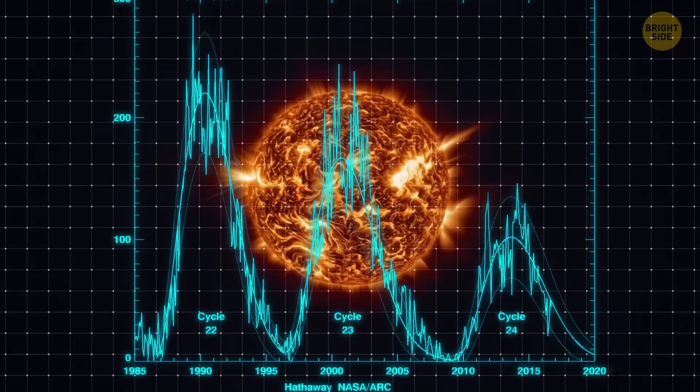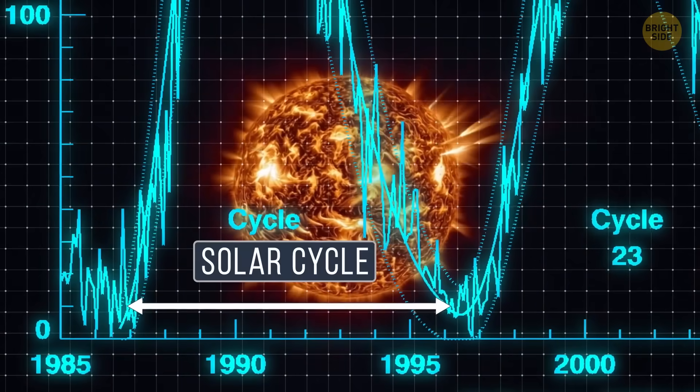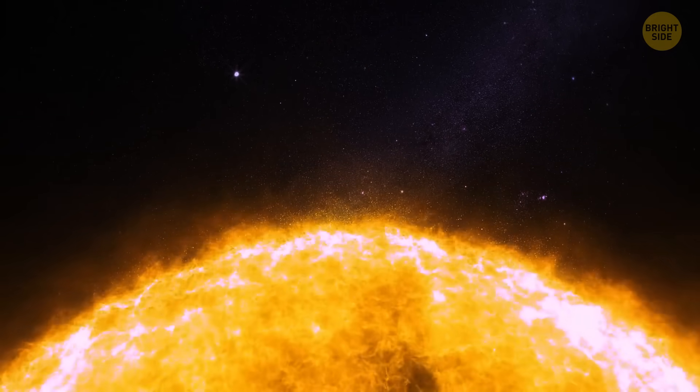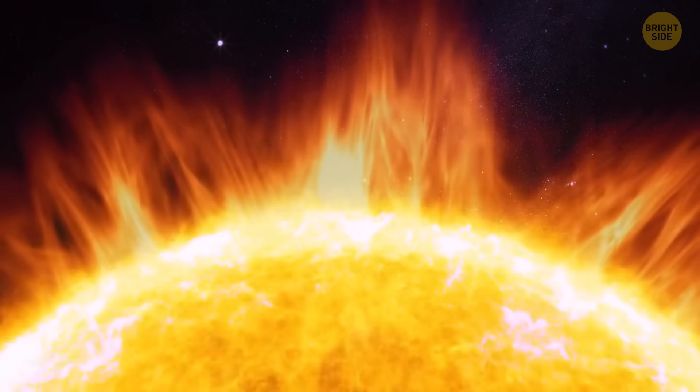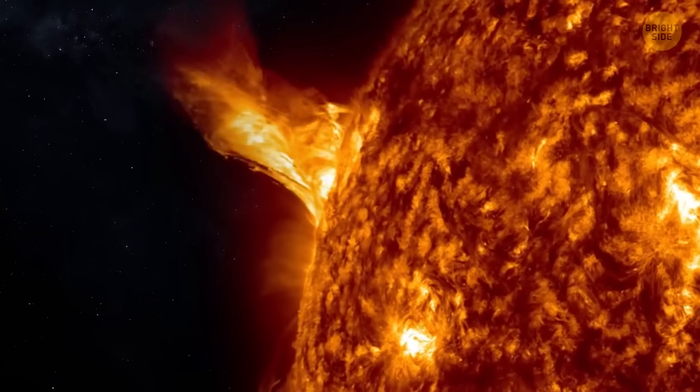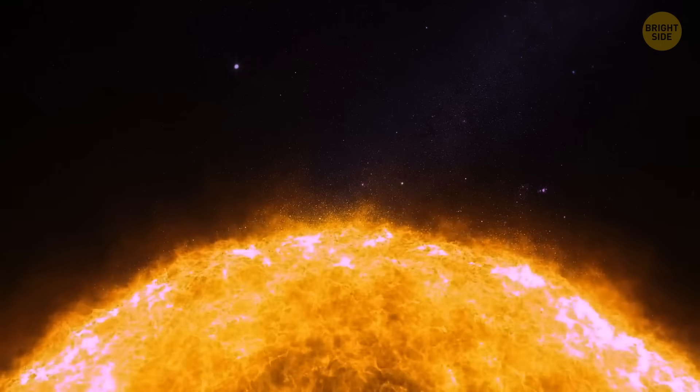The Sun goes through a kind of mood swing every 11 years. This is called the solar cycle. It starts off at a solar minimum, which is pretty chill, then slowly gets rowdy. We're talking sunspots, solar flares, and other fiery drama. Once we reach solar maximum, the situation starts to calm down again.